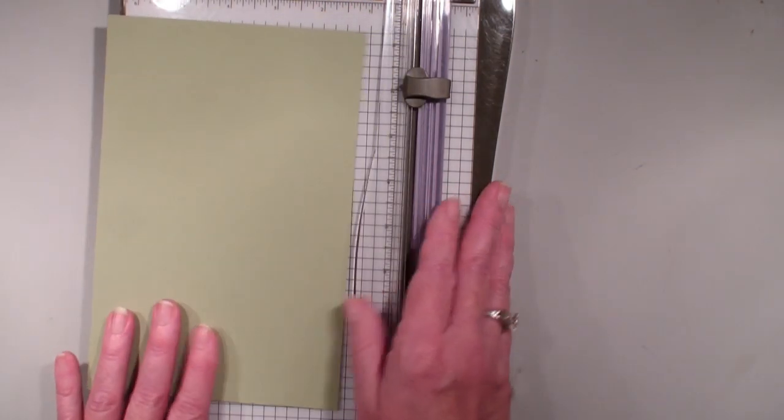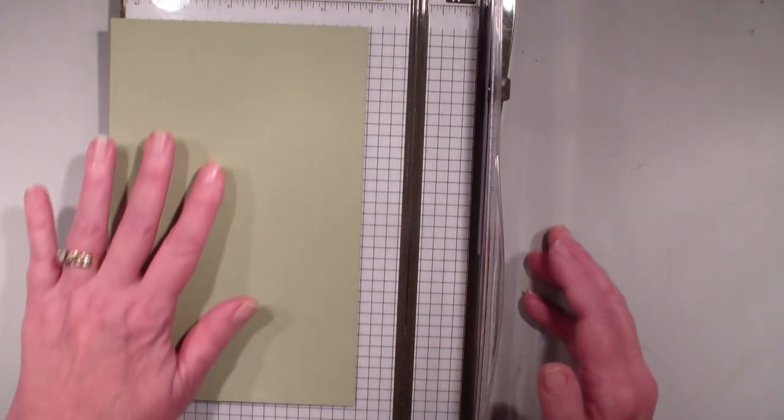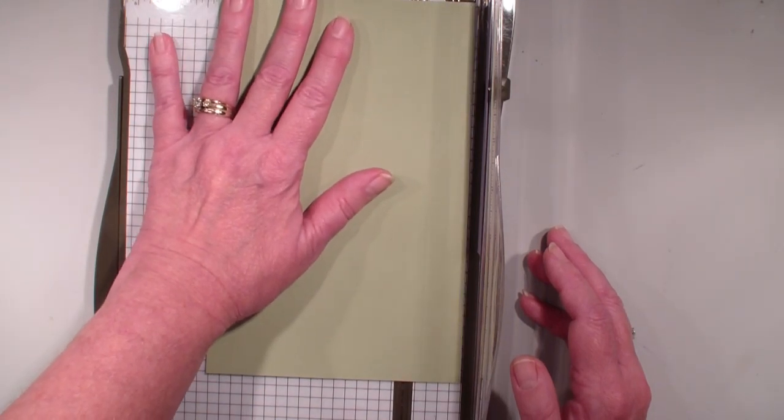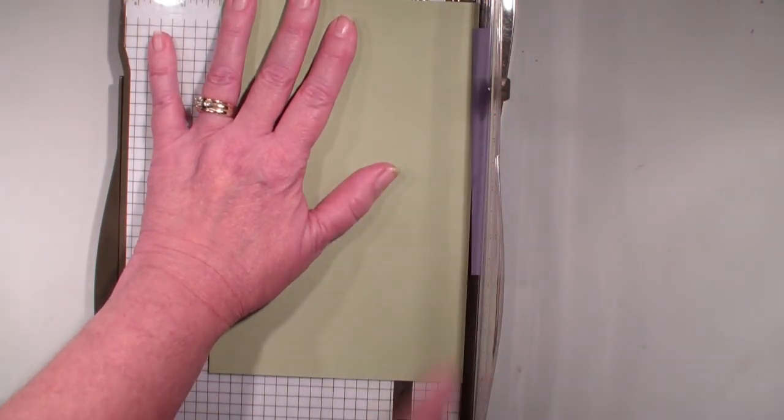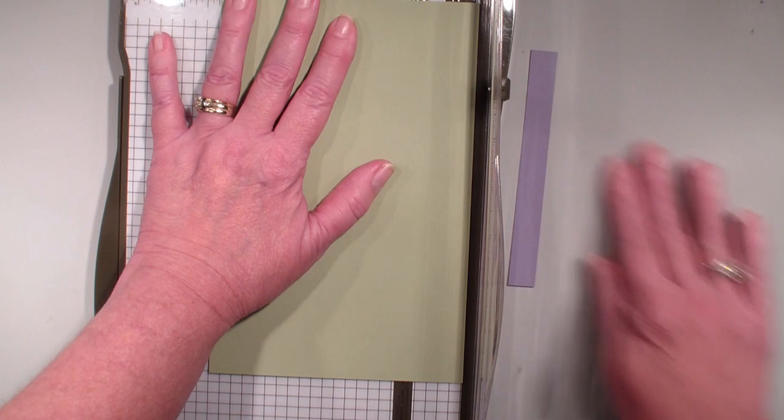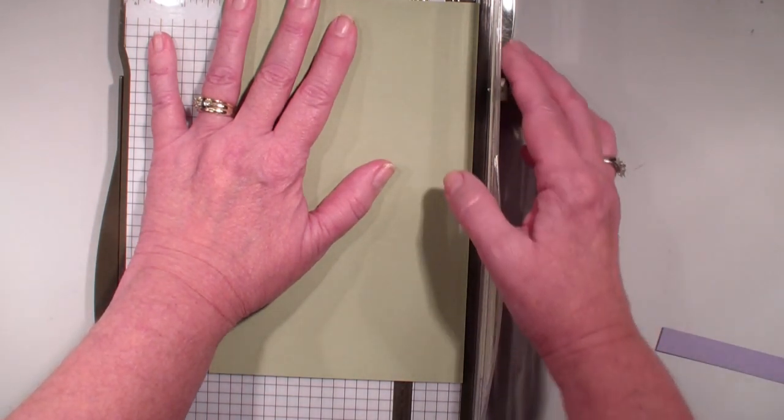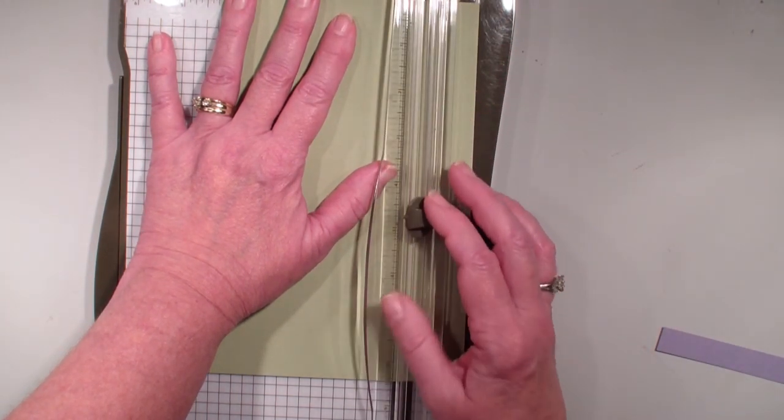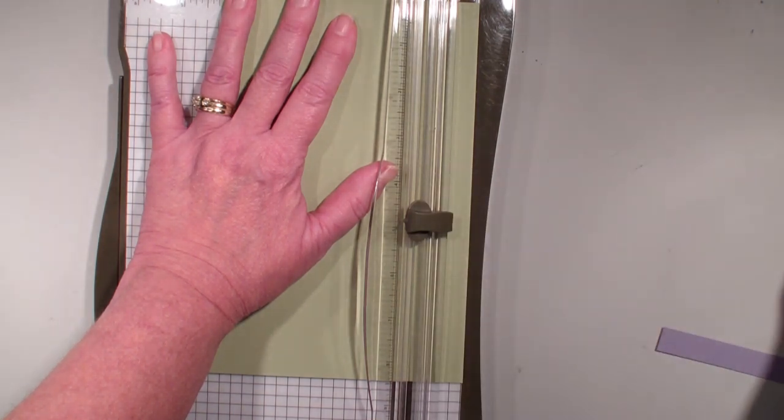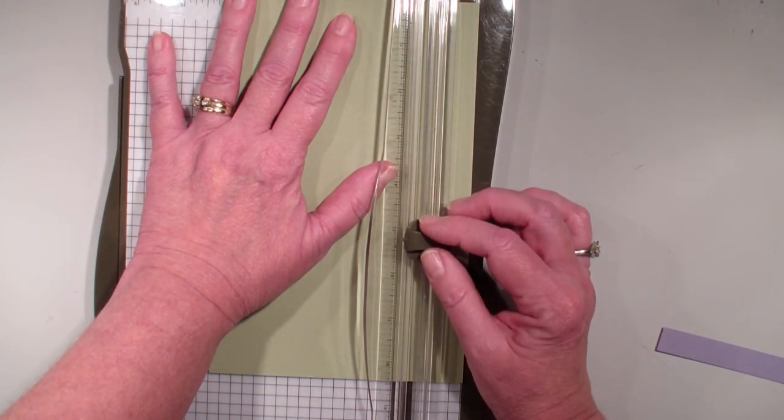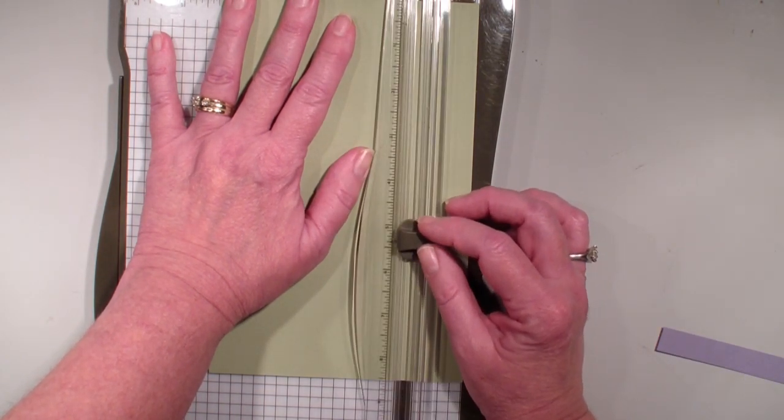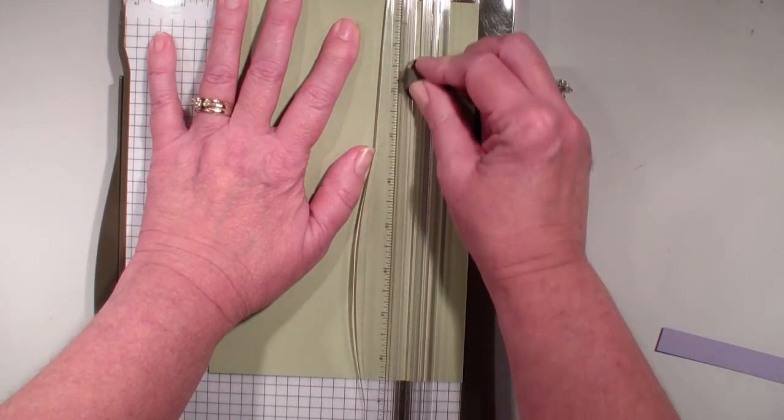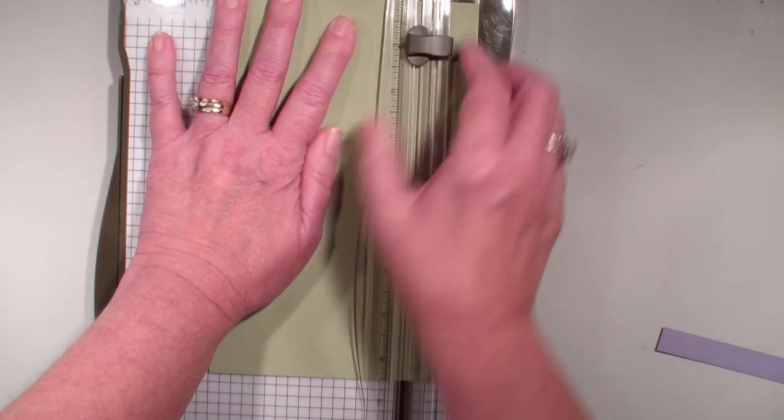So I went in with my Stampin' Up! trimmer and pushed my paper over to the inch and a quarter mark, which is the long piece on the side. What I did was I started at the 5¼ mark, so with my cutting blade lined up at 5¼ and then I cut down to the 1 inch.